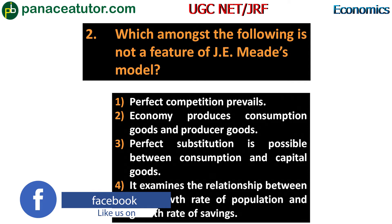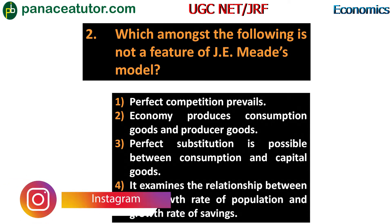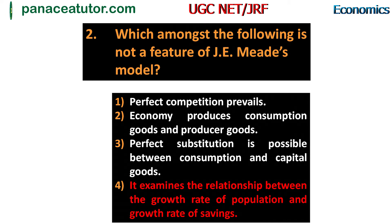Next question: which amongst the following is NOT a feature of J.E. Meade's model? Options: first, perfect competition prevails; second, economy produces consumption goods and producer goods; third, perfect substitution is possible between consumption and capital goods; fourth, it examines the relationship between the growth rate of population and growth rate of savings. Options one, two, and three are correct features. Option four is wrong, so the answer is option four.